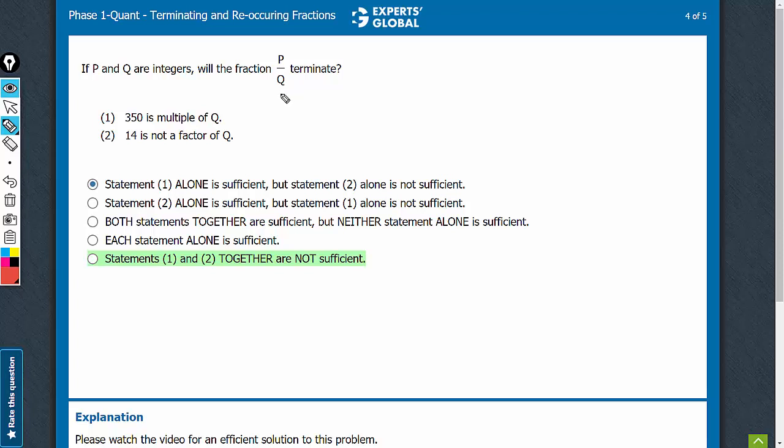The concept is that P by Q will terminate if Q has only 2 and 5 as the prime factors. Look at statement 1.